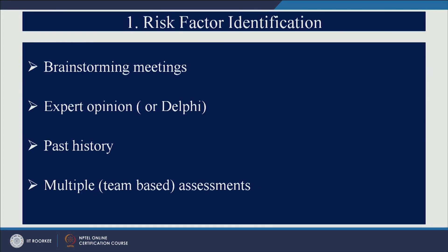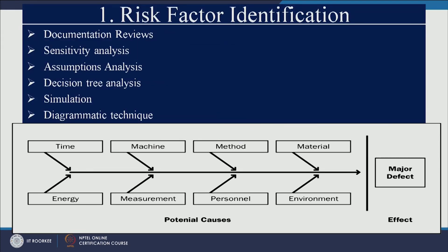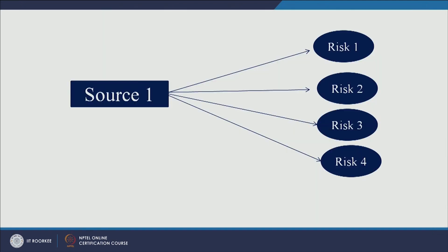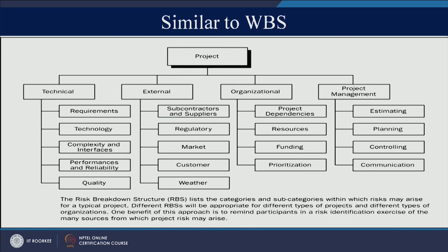How to identify risk is a most important point. You can go for brainstorming sessions, expert opinion, the Delphi method, or on the basis of past data to identify different types of risks. You can also have several sources for one risk, and one source for several risks. Risks can be identified by reviewing previous documents, sensitivity analysis, assumption analysis, decision tree analysis, simulation, and diagrammatic techniques. You should also come up with a risk breakdown structure, similar to a work breakdown structure.